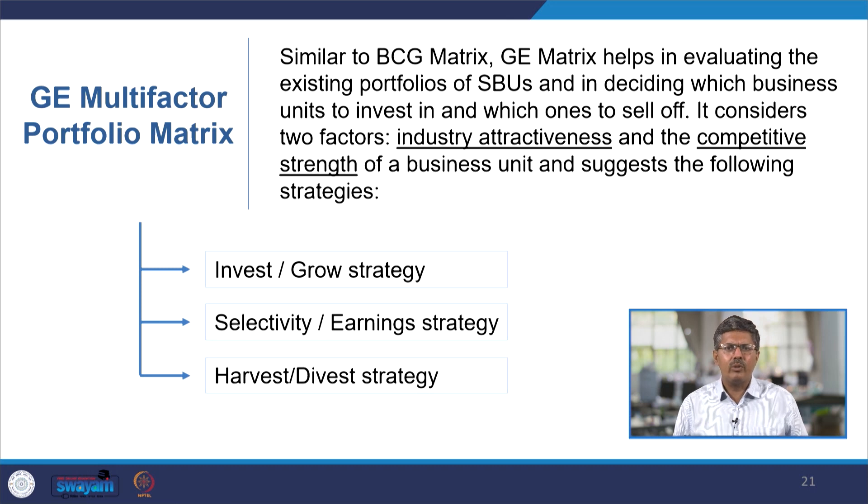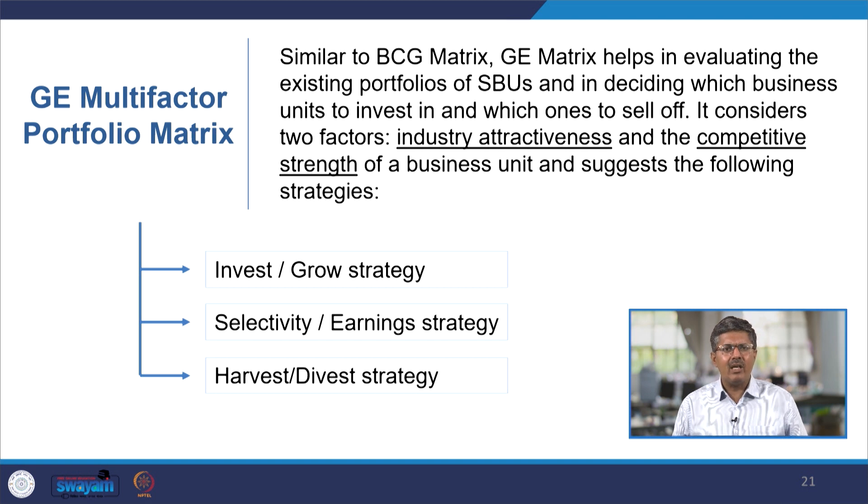Only talking about a product might not work. Sometimes we have to go beyond BCG being only a 2x2 matrix. Today we will be discussing another matrix developed by one of the most profound and respectable companies in the world - General Electric. General Electric is one company declared as the century's best company. They gave a model called the GE multi-factor portfolio matrix, or in short the GE matrix or GE 9-cell matrix. This matrix helps in evaluating the existing portfolio of SBUs - the strategic business units - and decides which business units to invest in and which ones to sell off or divest.